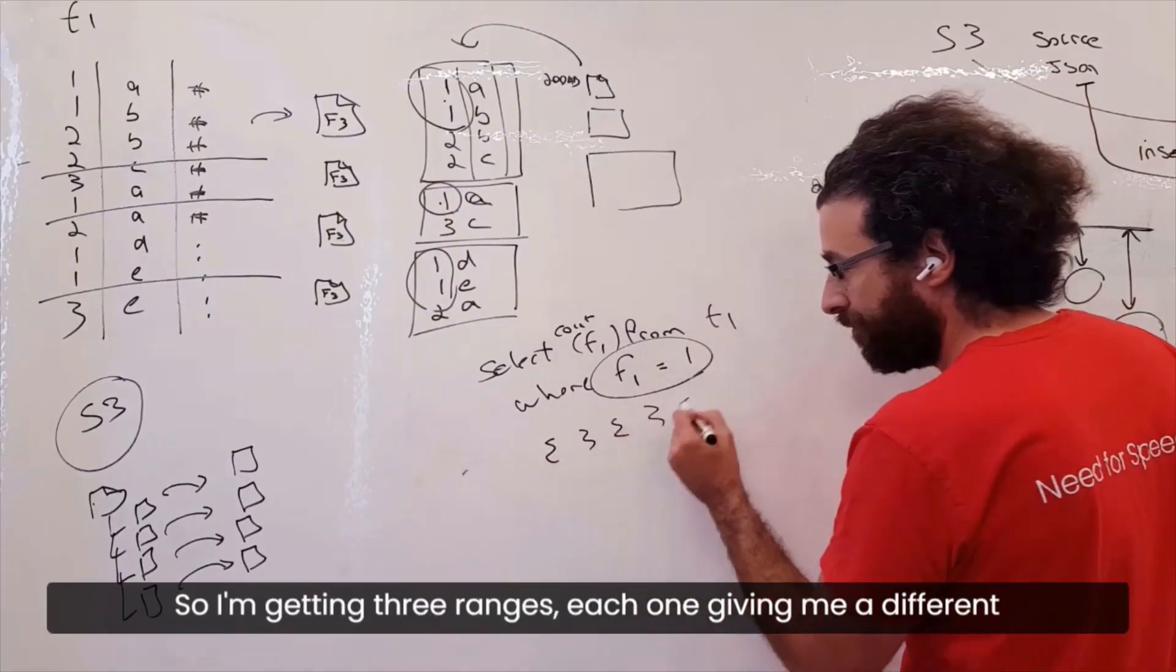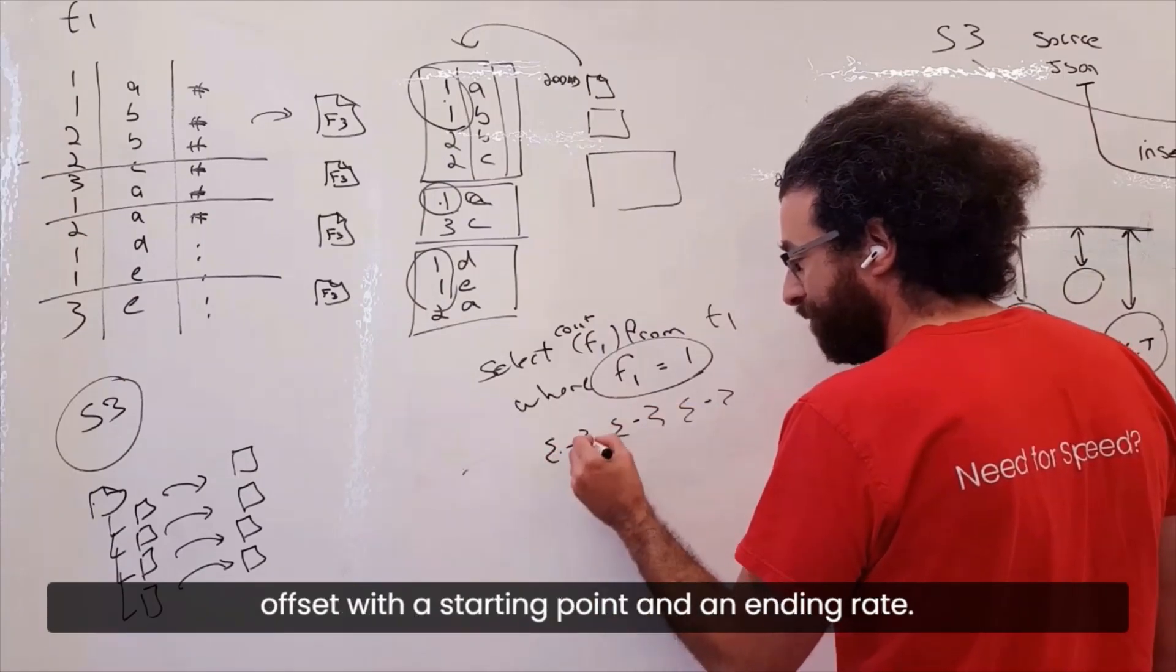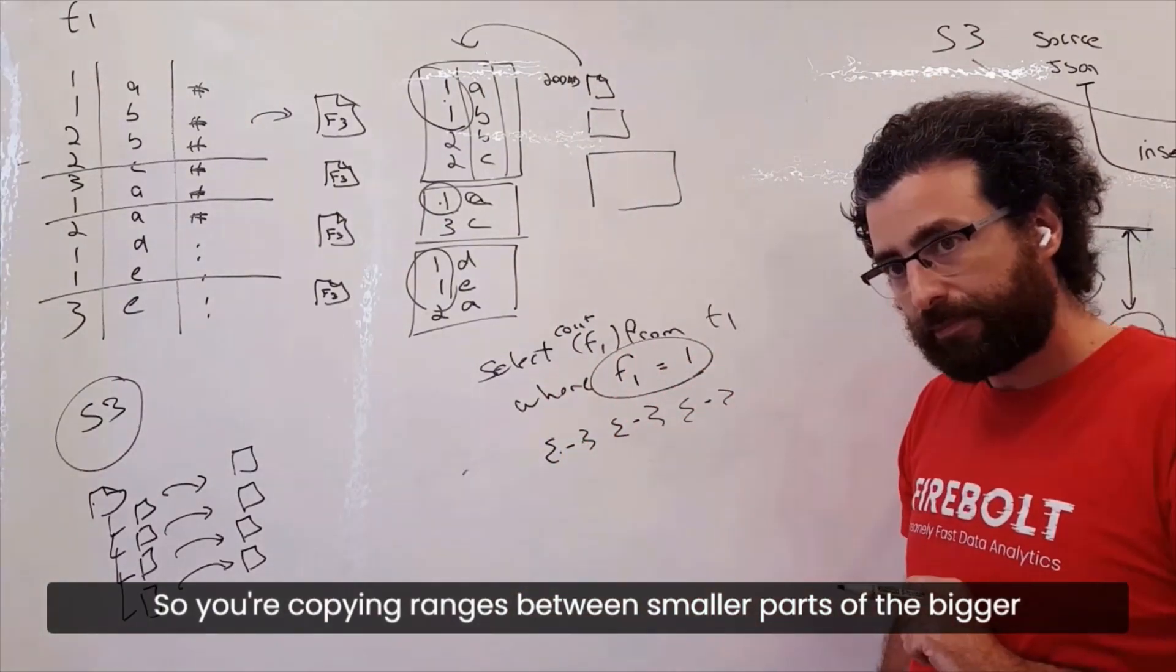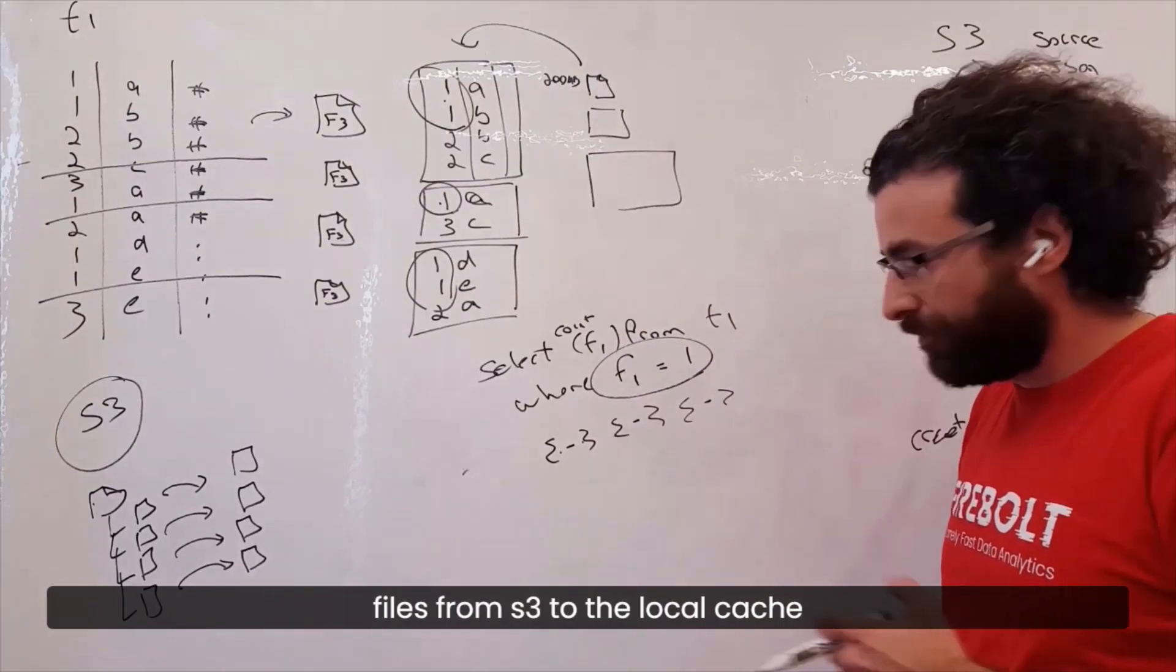each one giving me a different offset with a starting point and an ending range. So you're copying ranges in between smaller parts of the bigger files from S3 to the local cache.